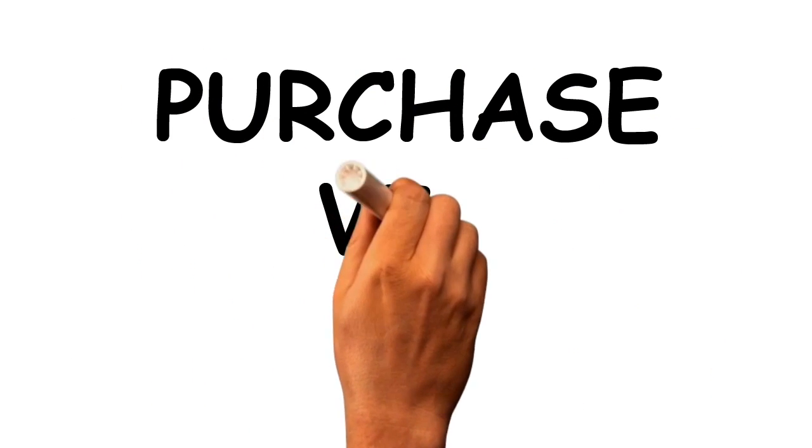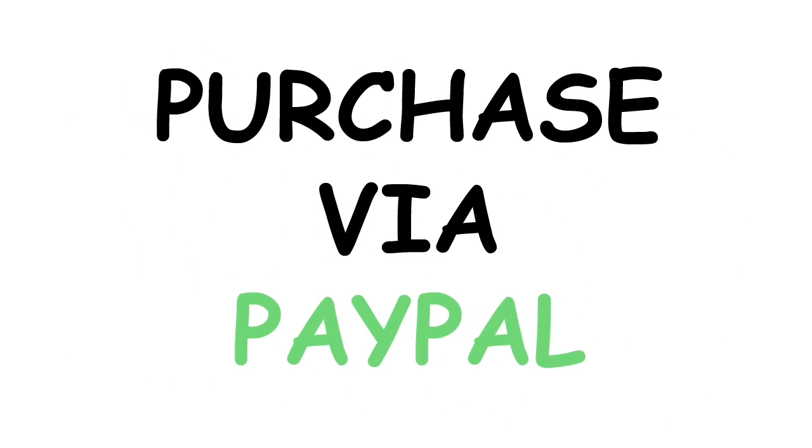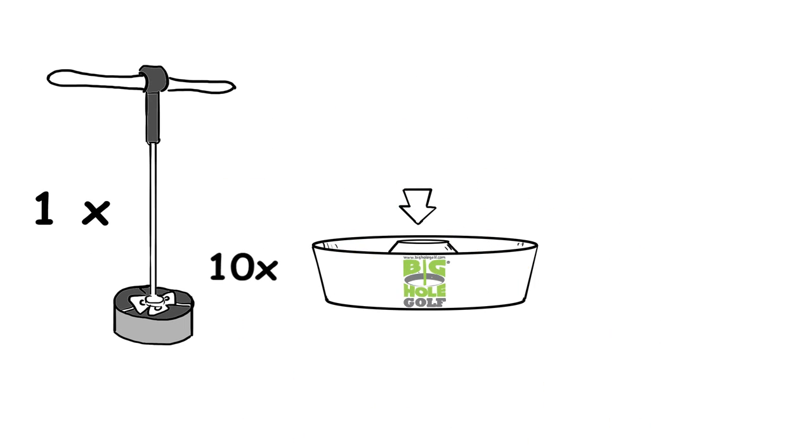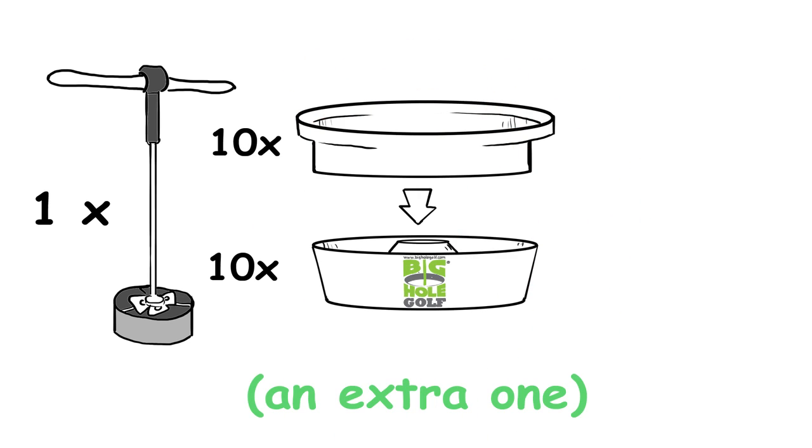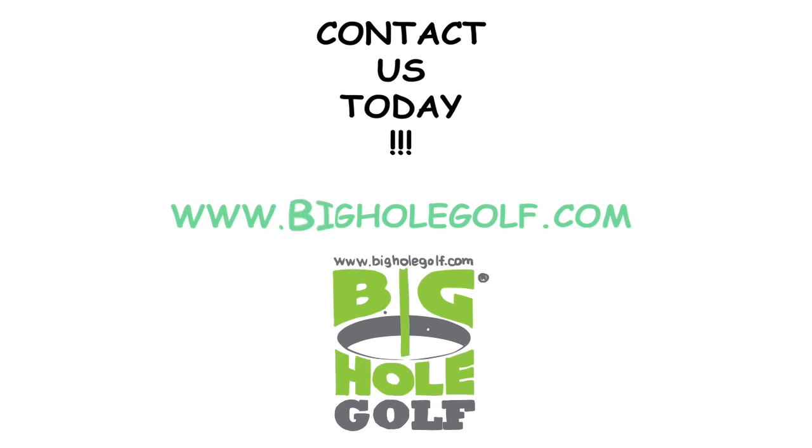The 9-Hole Big Hole Golf Kit can be purchased via PayPal, and it includes 1 Big Hole Cutter, 10 Big Hole Golf 8-inch Cups, an extra cup for the practice green, 10 Big Hole Golf Cup Covers, 10 Big Hole Golf Event Flags. Contact us today, www.bigholegolf.com.